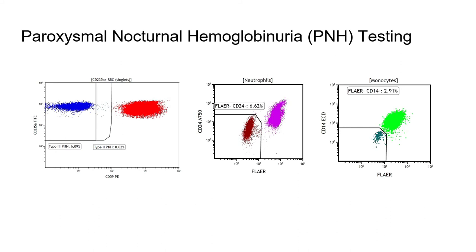In addition, we use another marker called FLAER — a fluorescently labeled bacterial toxin called aerolysin that binds to GPI anchors. If GPI anchors are absent, FLAER expression will be reduced. On the gated plots to the right, we see a subpopulation of neutrophils and monocytes with decreased FLAER expression, indicating a loss of the GPI anchors.